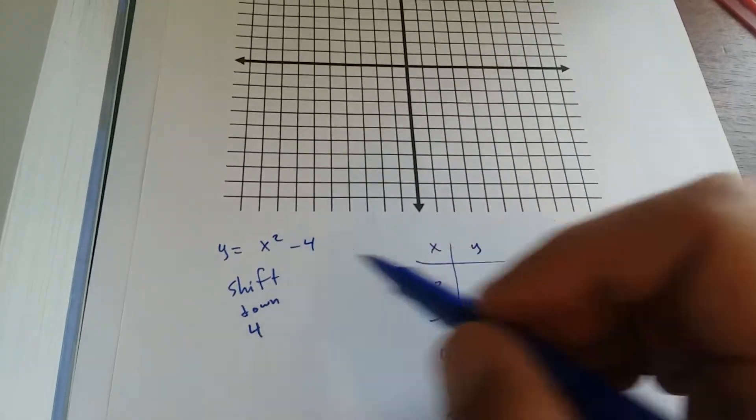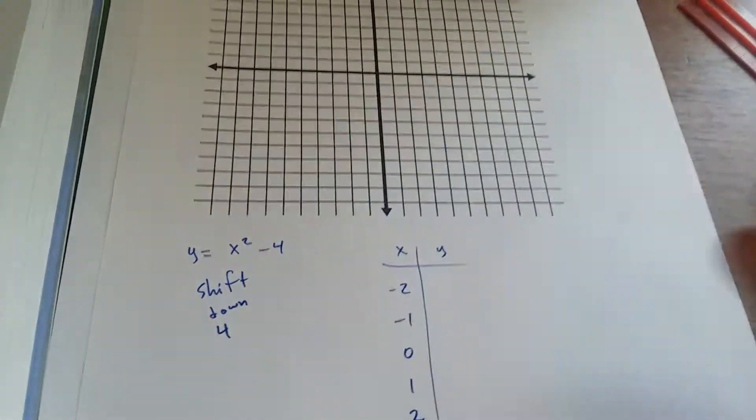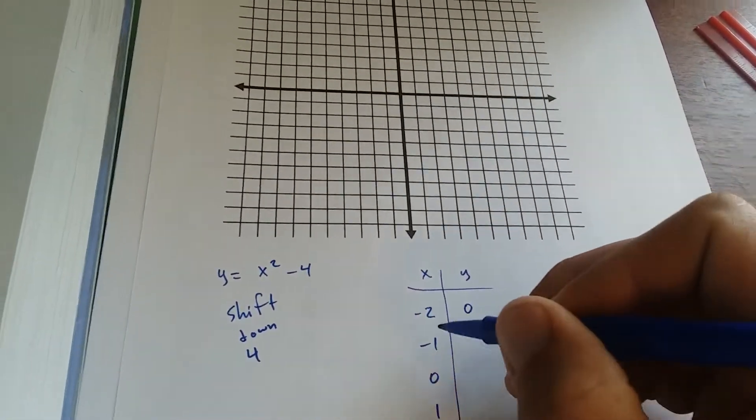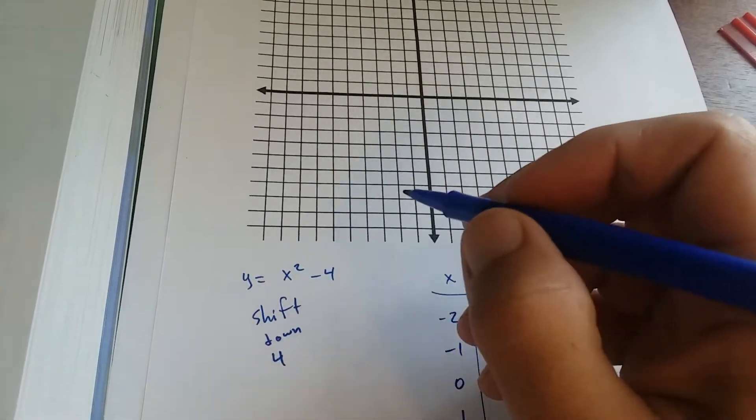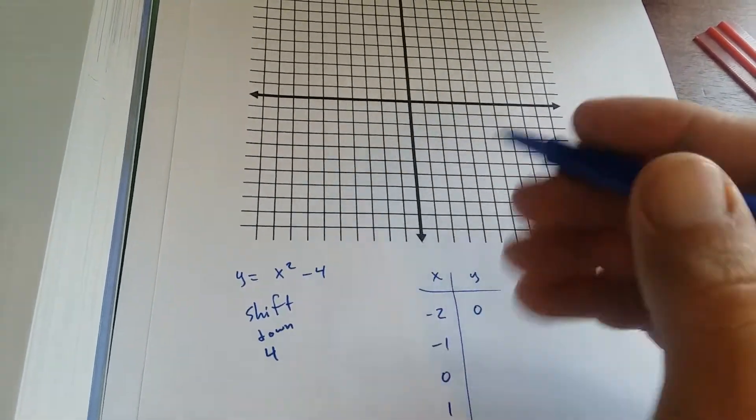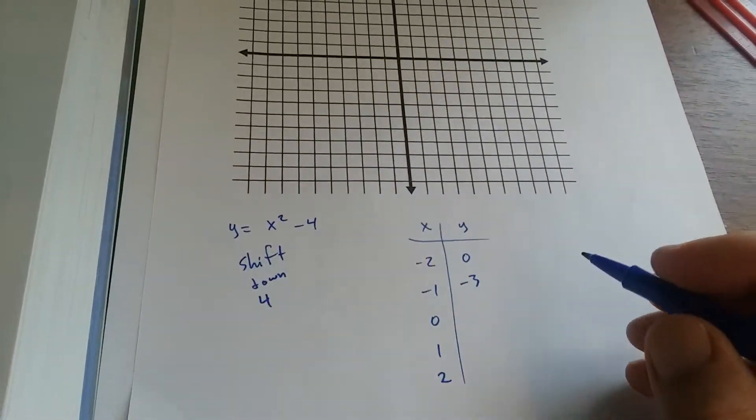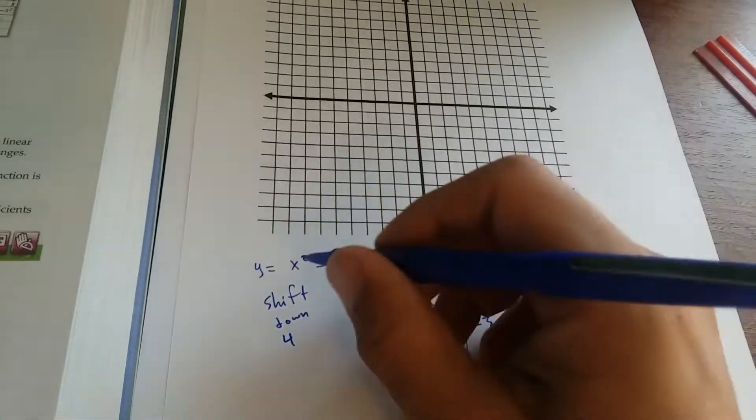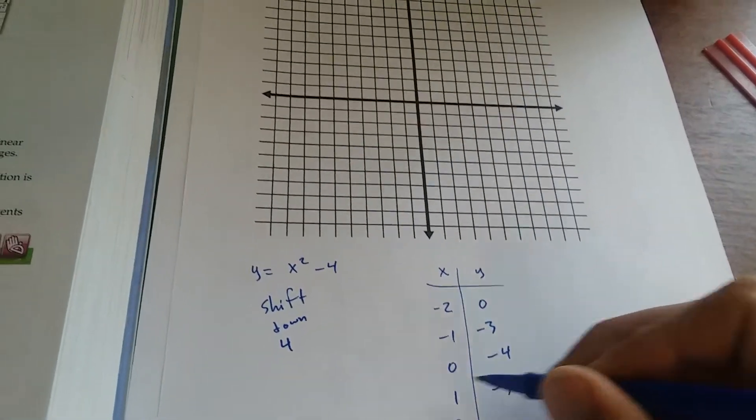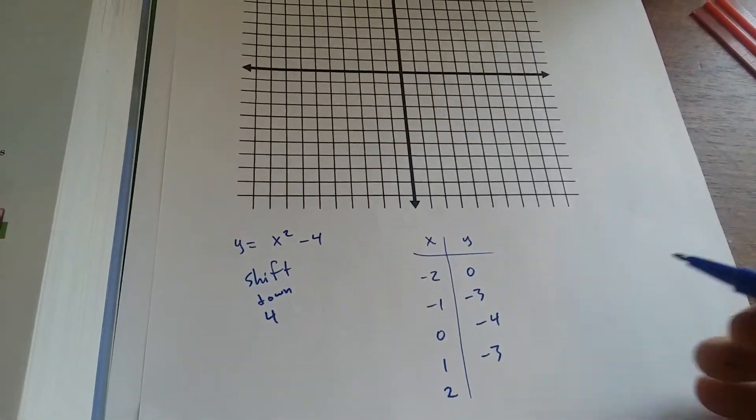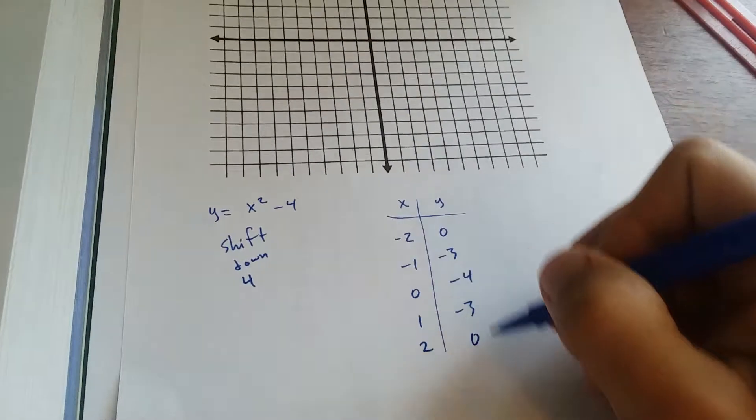So if you do negative 2 squared, you get 4. 4 minus 4 is 0. Negative 1 squared is 1. 1 minus 4 is negative 3. 0 minus 4 is negative 4. 1 minus 4 is negative 3. 2 squared is 4. 4 minus 4 is 0. So graph these points.